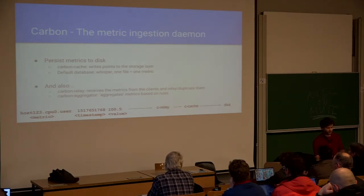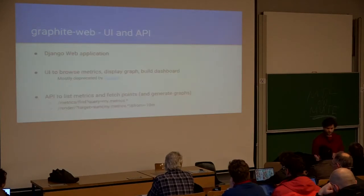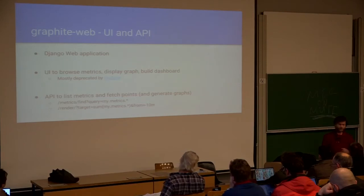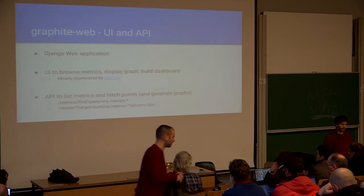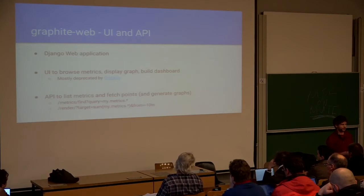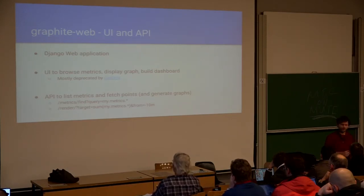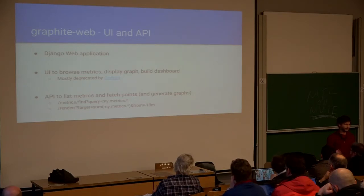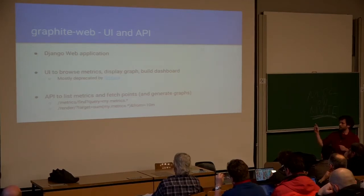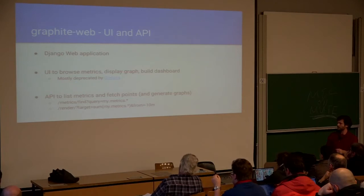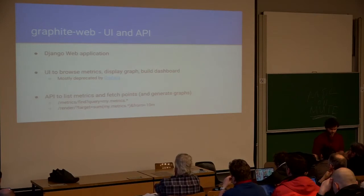Now you have an application sending metrics to Carbon and it's written to disk. How do you make a graph out of that? The component that does that is Graphite-Web. Graphite-Web is basically a Django application that reads these files back and either returns JSON that you could use in Grafana to build a graph, or renders a graph image directly. Graphite-Web has an API with two main endpoints. The first is used to find metrics, which is useful for auto-complete. The second returns the data points — for example, the sum of my.metric.pointer in the last 10 minutes.